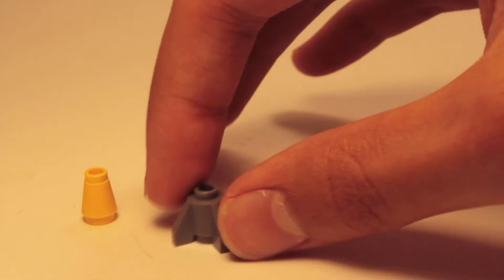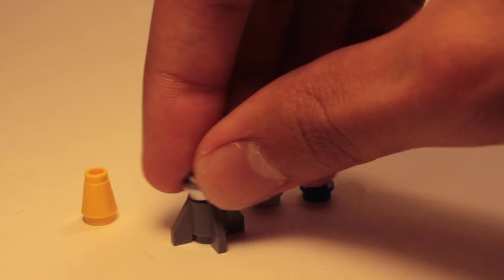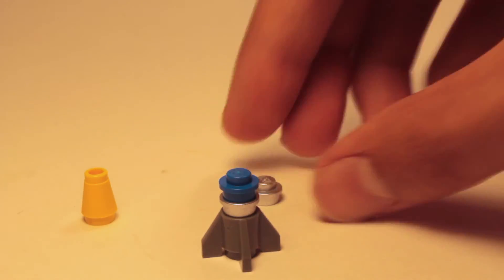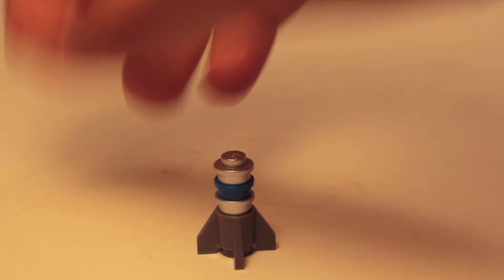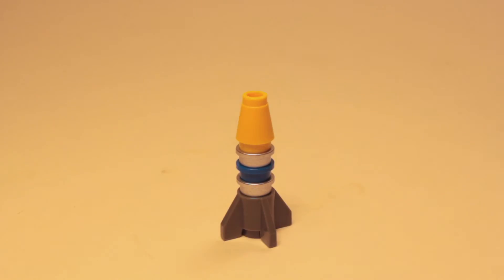So, once again, my little rocket slash missile-looking piece. I just kind of stack my studs on top of each other to give it a nice look, and finally, the comb brick on top, and there you go. Looks really super nice.